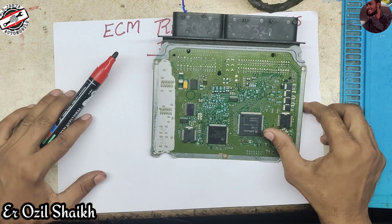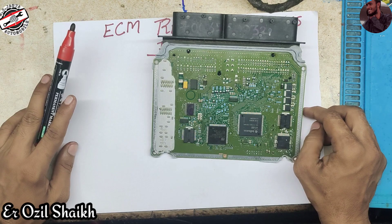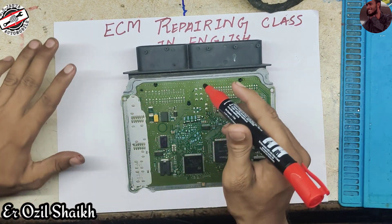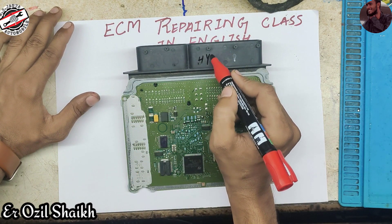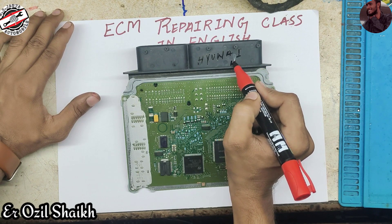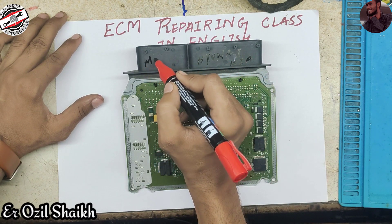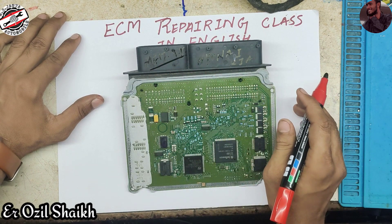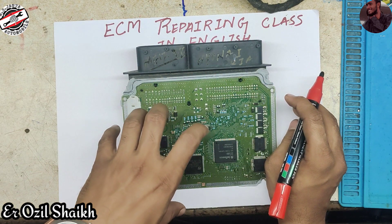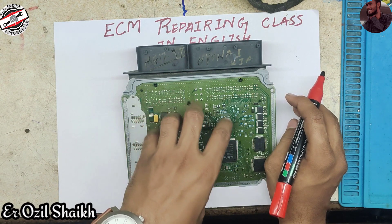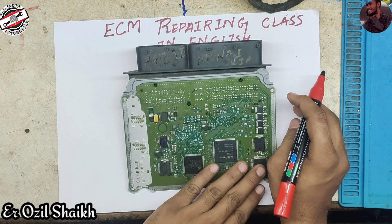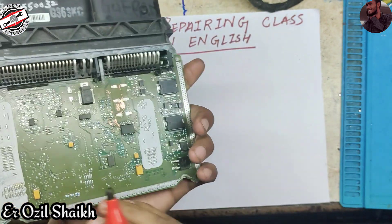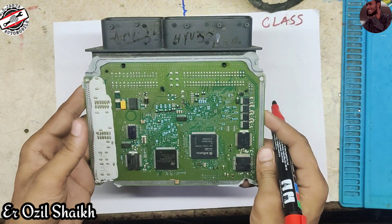Hello everyone, this is Ozil, welcome back to my channel. Today I am going to explain this ECM used in Hyundai and Kia. The hardware number of this ECM is MEG 17.9.12. I'll explain how the power section flows inside the ECM and how the power ICs work. In this ECM we have three power ICs — one, two, and three.